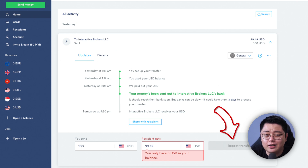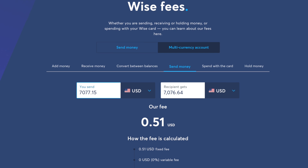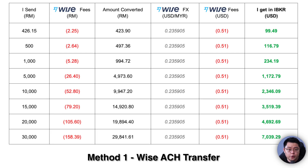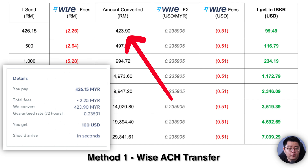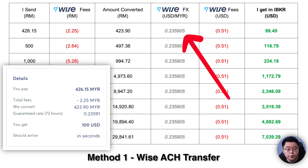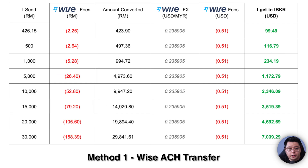This section is for those who followed the previous CIMB Singapore plus Wise method, or if you're into nitty-gritty cost comparison details. I've documented the actual costs and foreign exchange rates for my transfers. For the Wise ACH transfer method: I paid 426 ringgit and 15 cents for 100 USD, with a fee of 2 ringgit 25 cents, leaving 423 ringgit 90 cents converted at 0.235905 USD per ringgit, giving me 100 USD. Transferring that to Interactive Brokers incurs a fixed fee of 51 US cents, resulting in 99 dollars and 49 cents in my IBKR account.